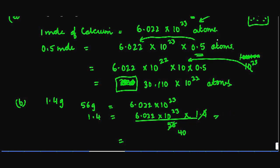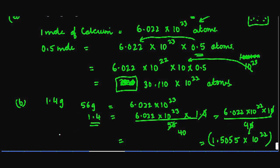Similar to what I did before, I can write this as 6.022 × 10^22 × 10 divided by 40. If I divide 6.022 by 4, I get 1.5055. So that's 1.5055 × 10^22 atoms contained in 1.4 grams of iron.